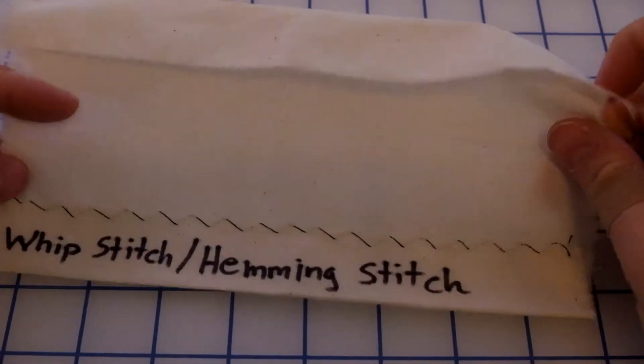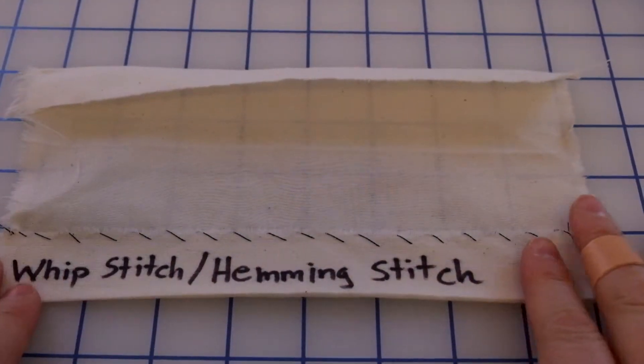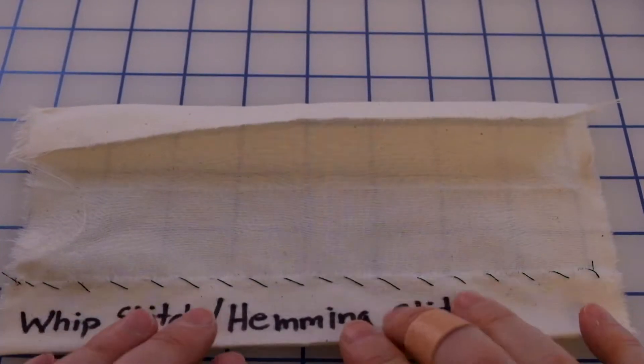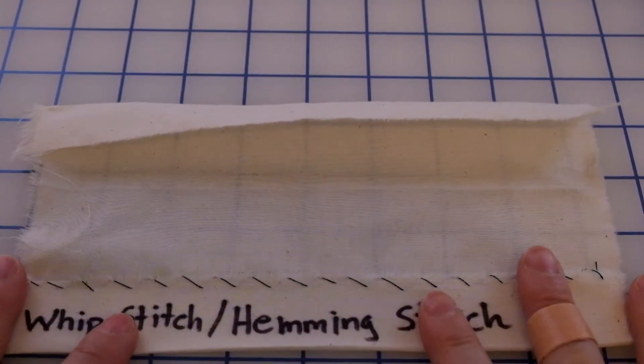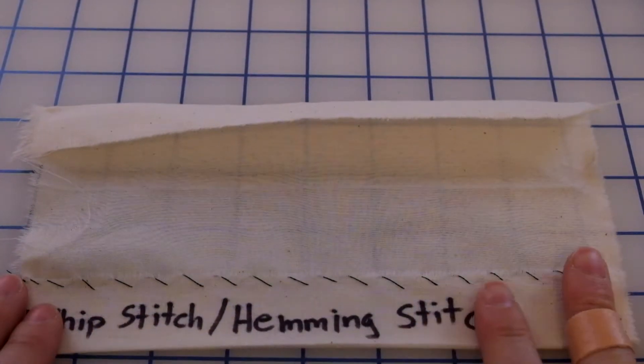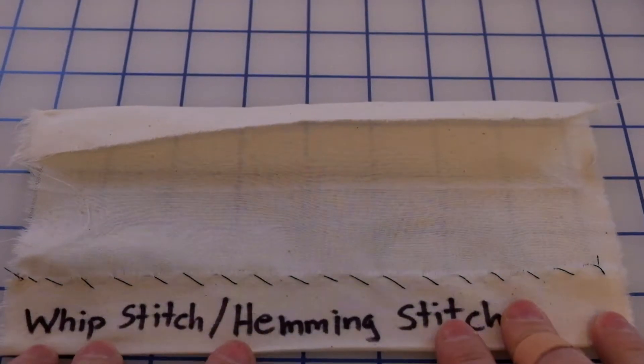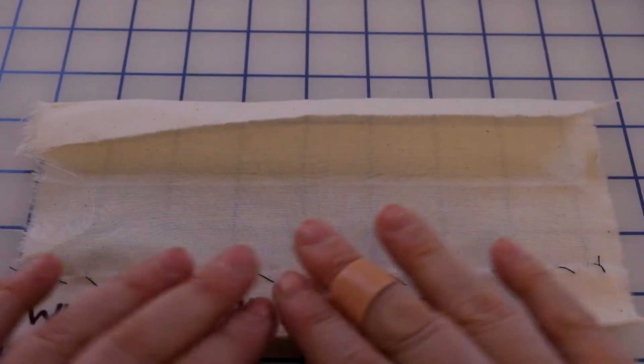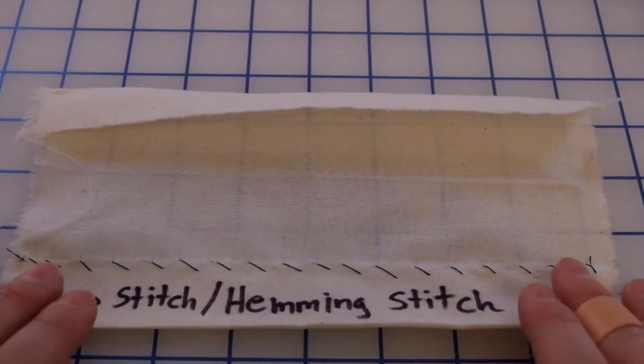The next stitch is called the hemming stitch or the whip stitch, and we use this as a finished stitch on the bottom of skirts, on pants, to stitch anything that you don't really want to see your stitching on the outside of the fabric.